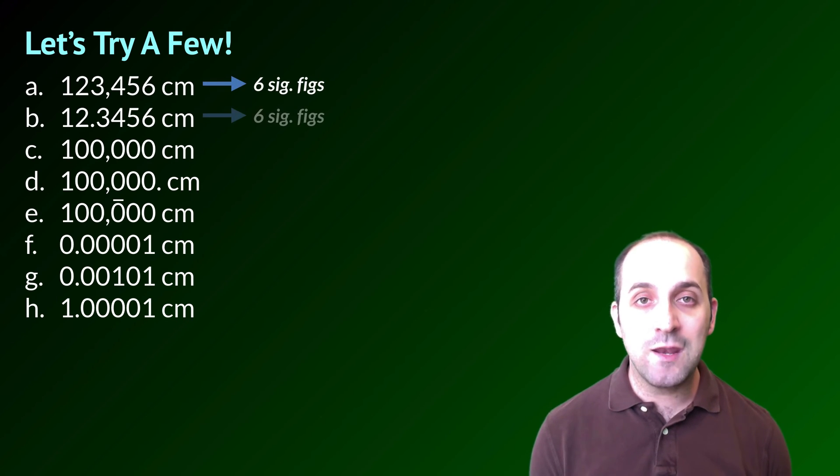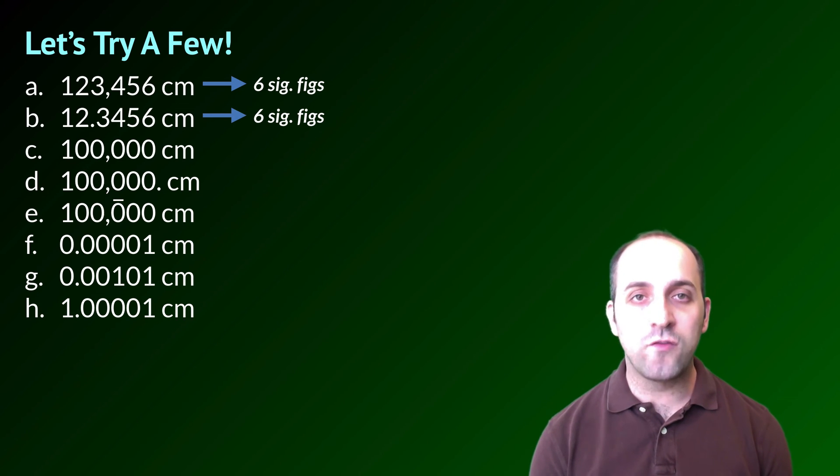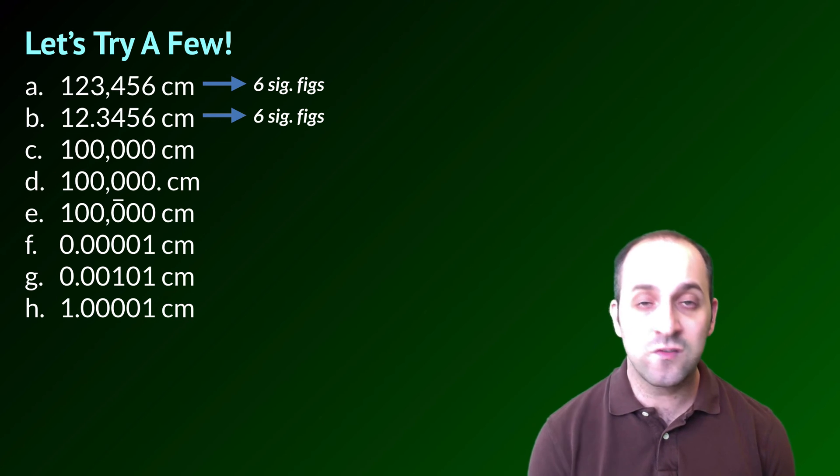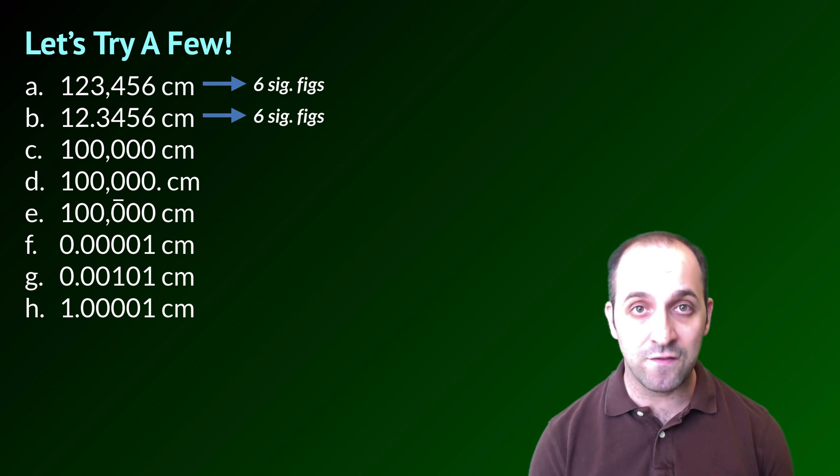In A and in B, there are six significant figures. Can you figure out why? The reason is because all of these numbers are non-zero numbers in both of these measurements, so the decimal point doesn't even really matter. All non-zero numbers are significant in any measurement.